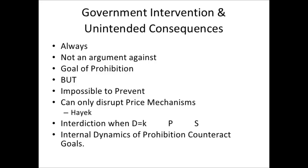Prohibition creates this internal dynamic where it defeats itself. If we take D equals K — demand is constant — and you interdict drugs coming into the UK, so there's 10% less heroin in the market tomorrow than there was yesterday, all that does is drive up price. And as we know from the law of supply, when price goes up, supply goes up. So the direct outcome of interdiction is to increase supply. That's a completely incoherent dynamic — it's not a sustainable policy approach. There's nothing rational about this; any simple economics will tell us this.